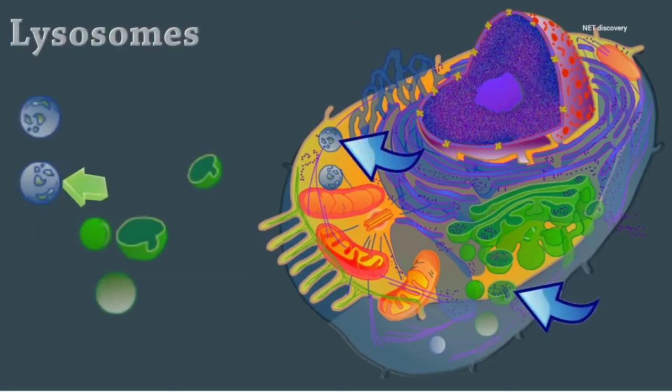Lysosomes are membranous sacs that contain acid hydrolases that break down different types of biomolecules. This is where intracellular digestion takes place. Lysosomes help with other cell processes, including secretion and the repair of plasma membranes.